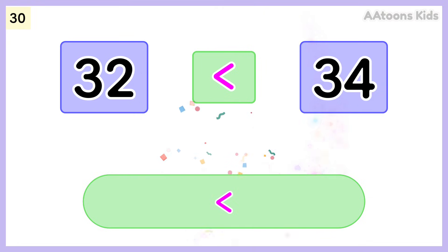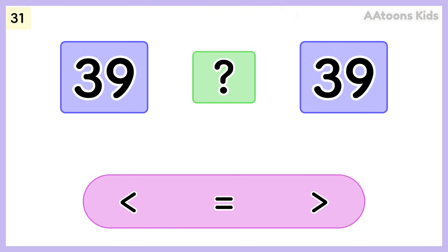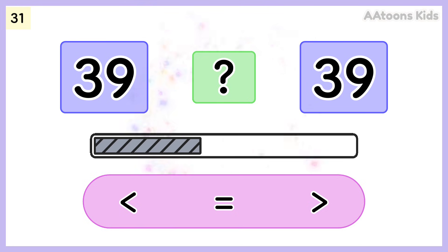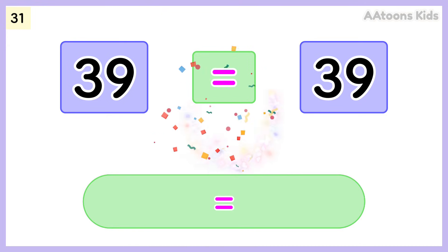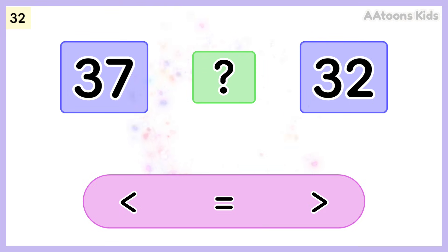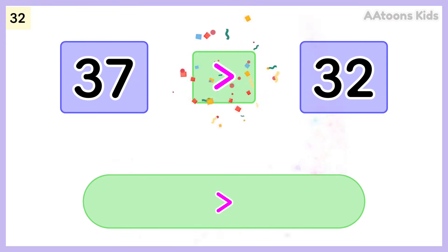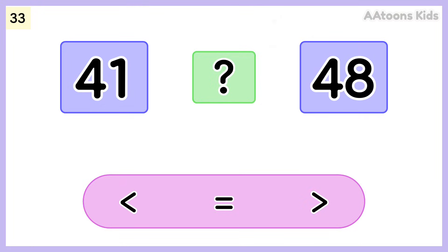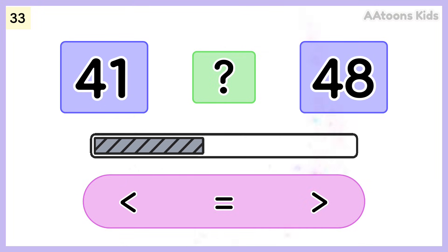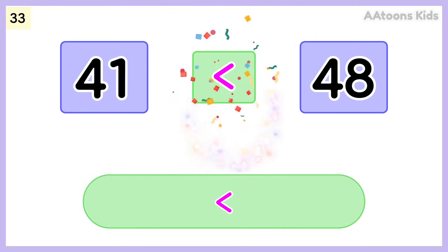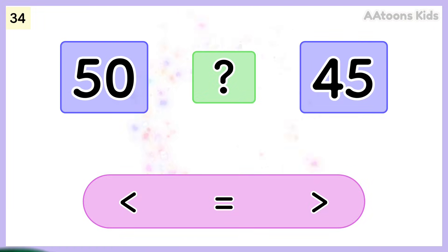Thirty-nine is less than thirty-four. Choose the correct symbol. Thirty-nine is equal to thirty-nine. Thirty-nine is less than thirty-eight. Pick the correct symbol. Thirty-seven is greater than thirty-two. Choose the correct symbol.